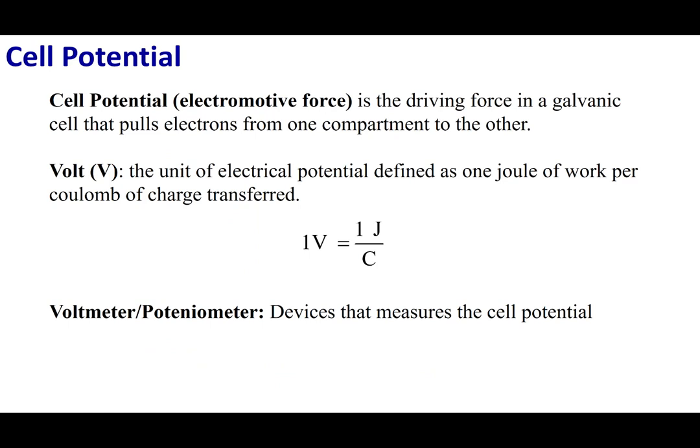In the next few sections, what we're going to be talking about is cell potential or the electromotive force. Basically, this is going to tell you how much energy the galvanic cell has, and how much energy you can take out of that cell. To measure that cell or that potential difference, what we're going to use is the unit called the volt. A volt is one joule per coulomb. The way that we measure volts is usually through a voltmeter or a potentiometer.